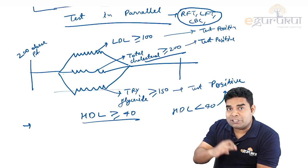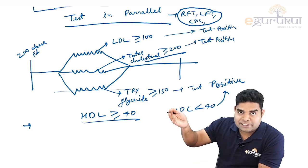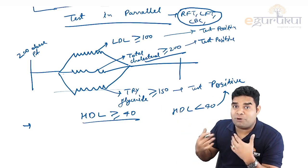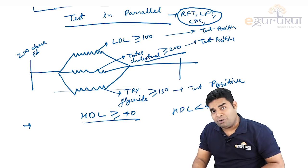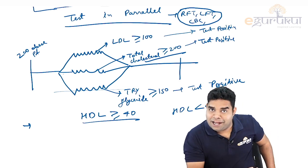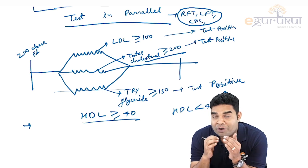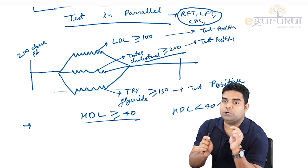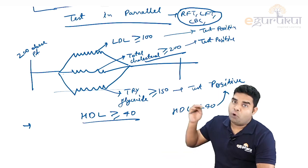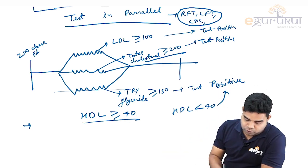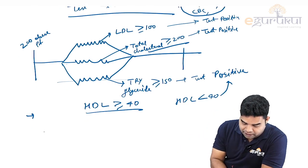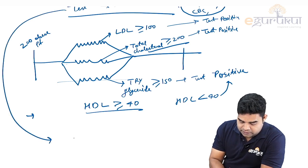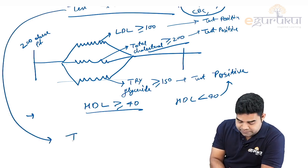But opposite to this is the HIV test. If I will be falsely positive for HIV, that will not be good for me—I may be very angry, I may kill someone. So we do test in series where we do not want false positives, and we do test in parallel where we want false positives.